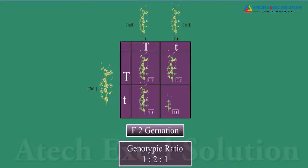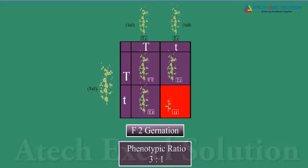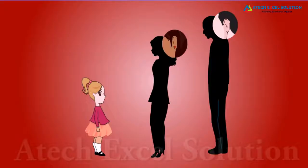On this basis, the genotypic ratio is 1:2:1. 75% of the progeny produced in F2 generation were tall, while 25% were dwarf. Hence, the phenotypic ratio is 3:1. Another example could be a child having an attached earlobe though his mother had a free earlobe — this could be obtained as his father had attached earlobes, and this was a dominant trait.